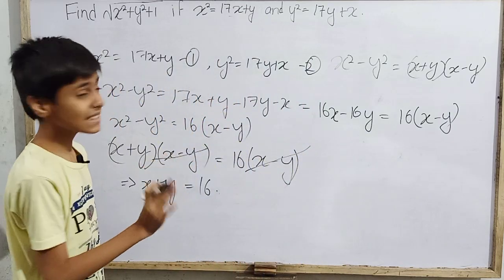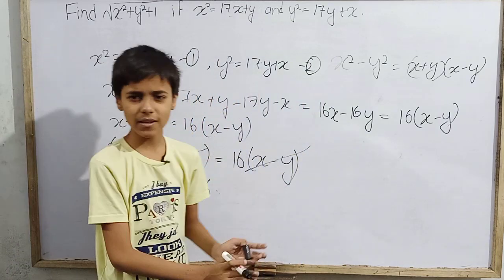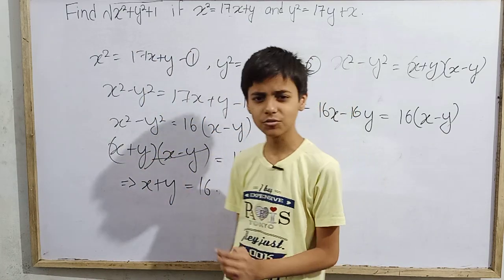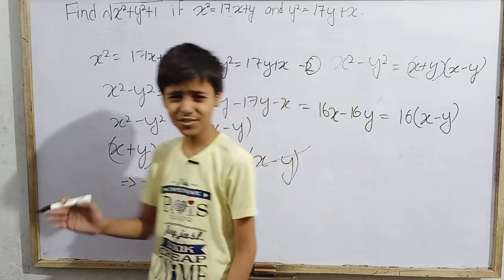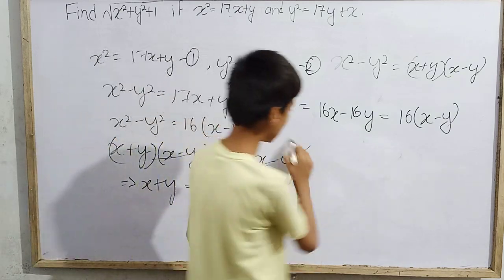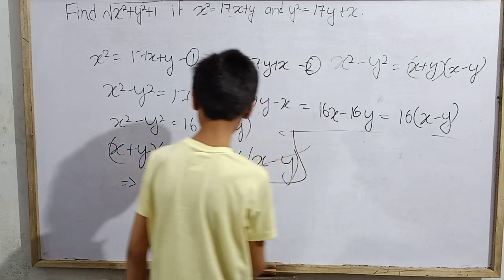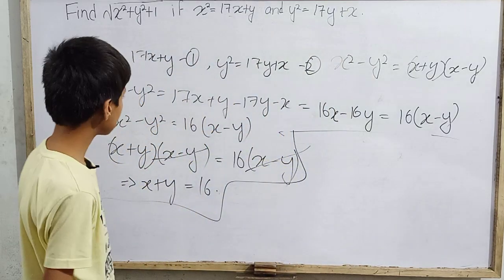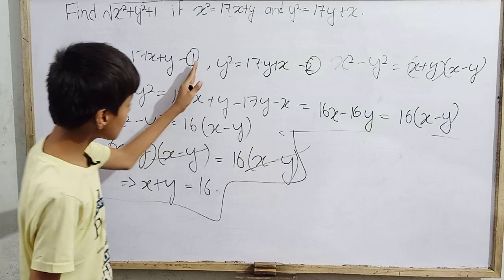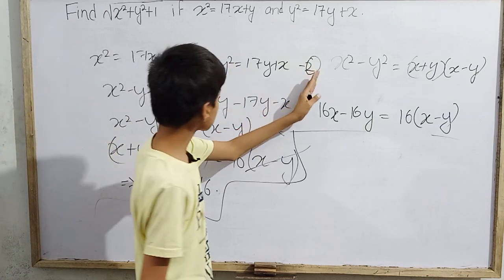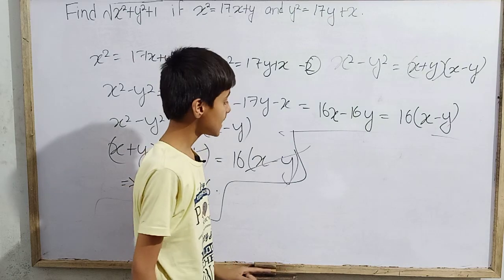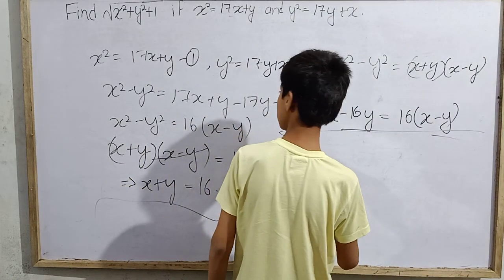But x + y = 16 is not our final answer — we need the square root of x² + y² + 1. To find x² + y², we need to know x² + y² first, which requires adding the two original equations. The subtraction step was essential because it gave us the value of x + y, which we'll need next.